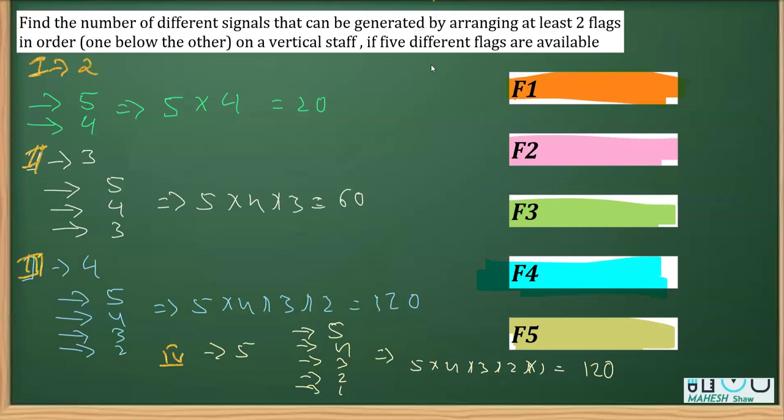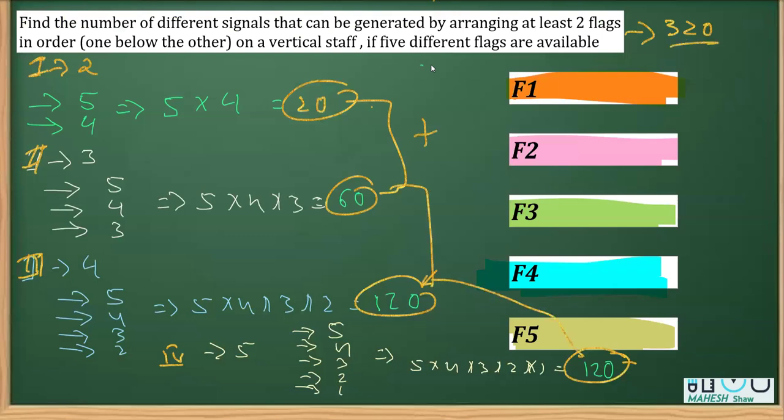So we can see that the total number of ways by which these different signals can be generated will be the sum of these. So what is the sum of these? So this plus this plus this plus this. So it comes out to be 60 plus 20, that's 80, 200 and 320. So we'll say that the total possible ways that can be generated is the sum of these which is 320. So we can say that there are 320 different signals can be generated.